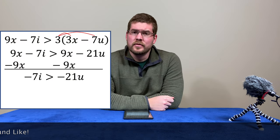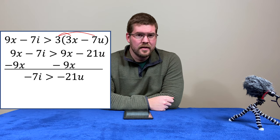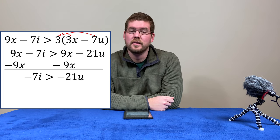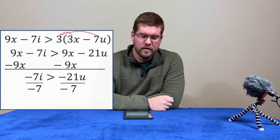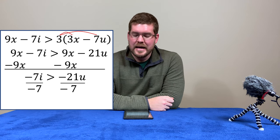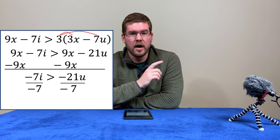We're now left with negative 7i is greater than a negative 21u. From there, we need to divide by negative 7, again, to both sides.